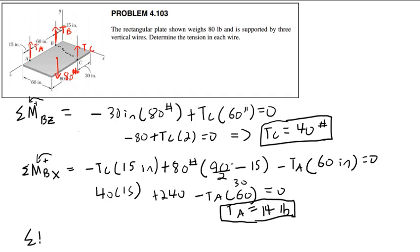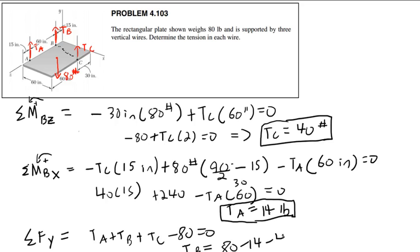Finally, sum of forces in the Y direction: TA plus TB plus TC minus 80 equals 0. So TB equals 80 minus 14 minus 40, giving TB equals 26 pounds. And that's it — TA equals 14 pounds, TB equals 26 pounds, TC equals 40 pounds. The 3D problems take a bit to wrap your head around, so stare at it for a while and look at examples in the book.